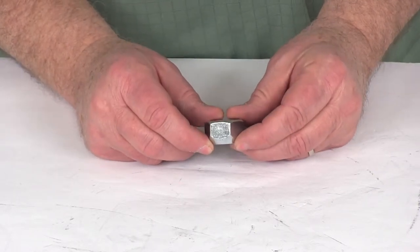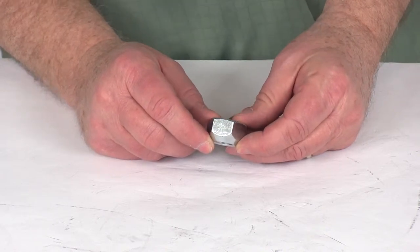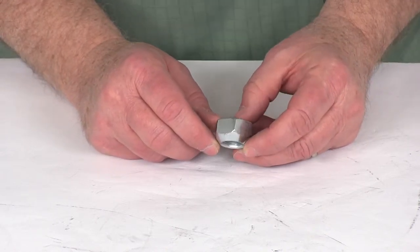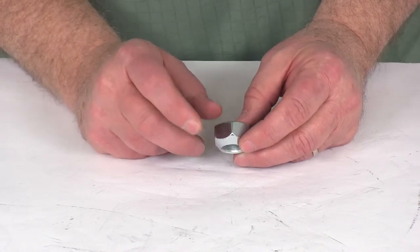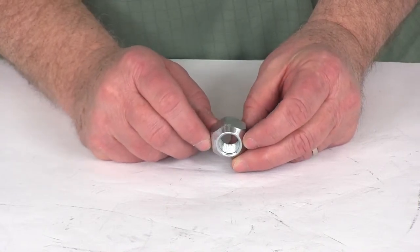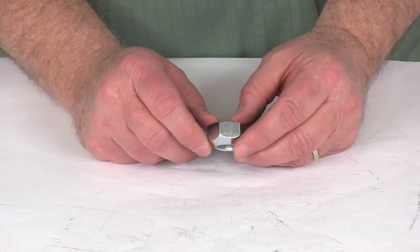Now this lug nut is a 90 degree cone and it's designed to fit the 90 degree cone of the lug hole on your wheel. This design lug nut, the 5 eighths inch by 18, 90 degree cone, is mainly used in a lot of your large truck applications like dually wheels.